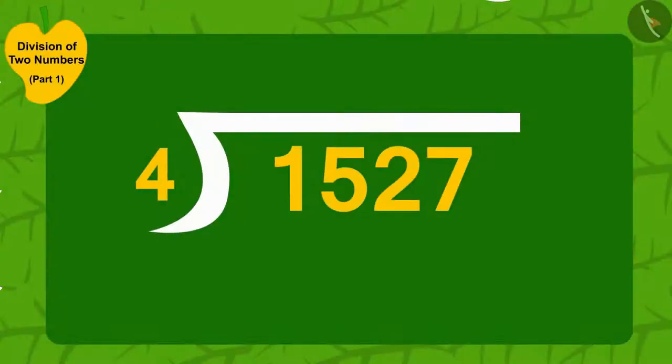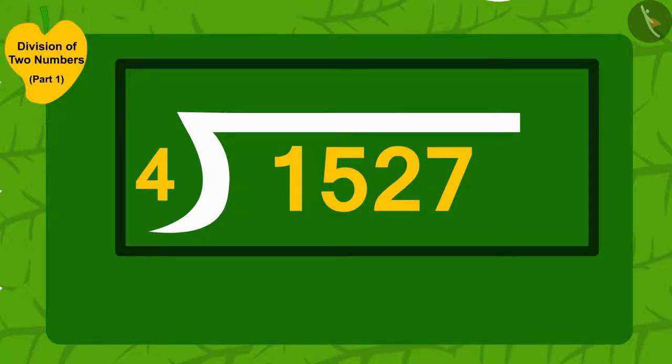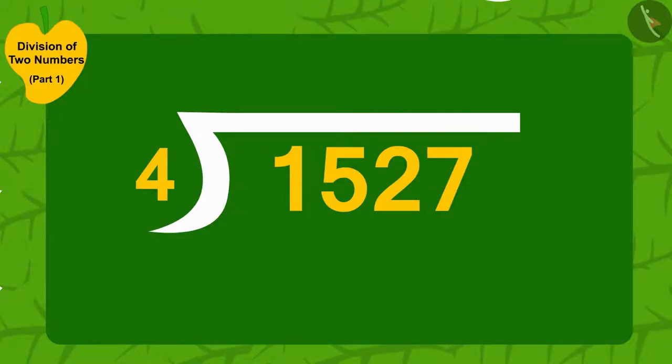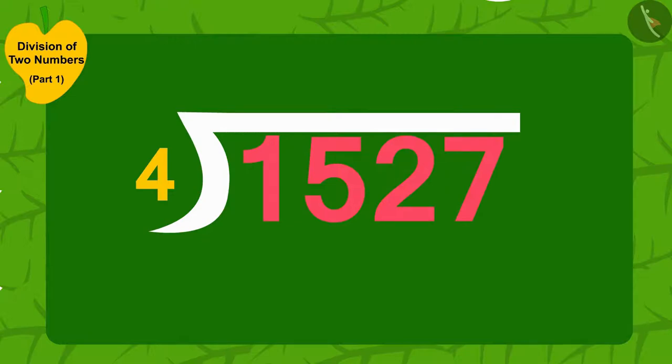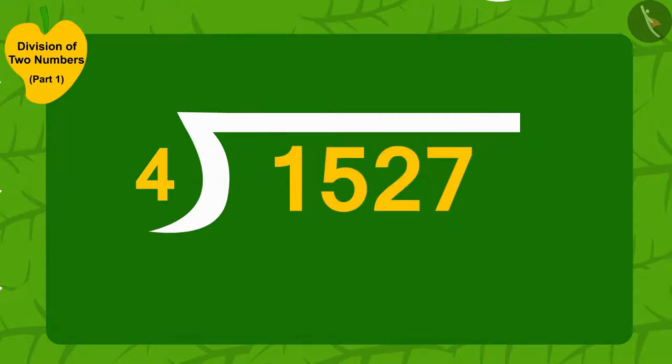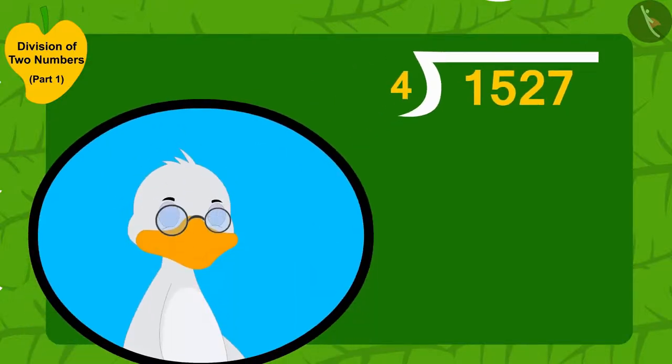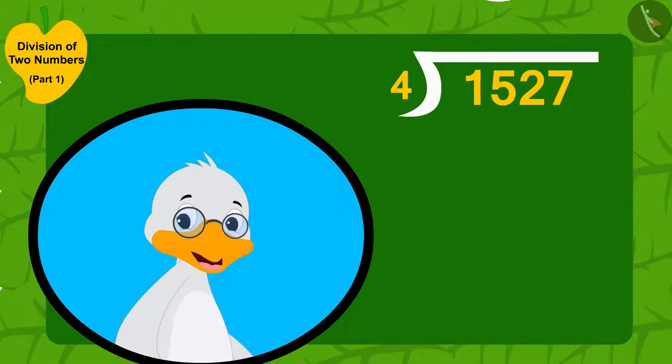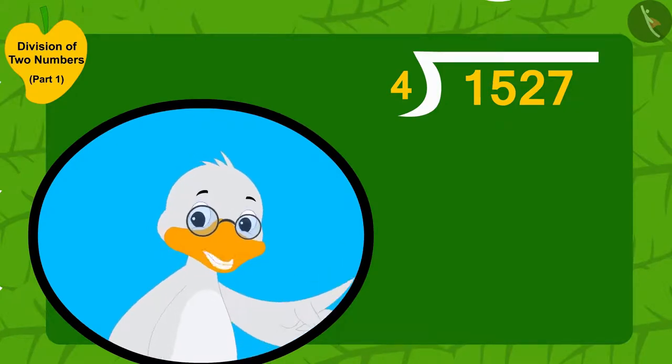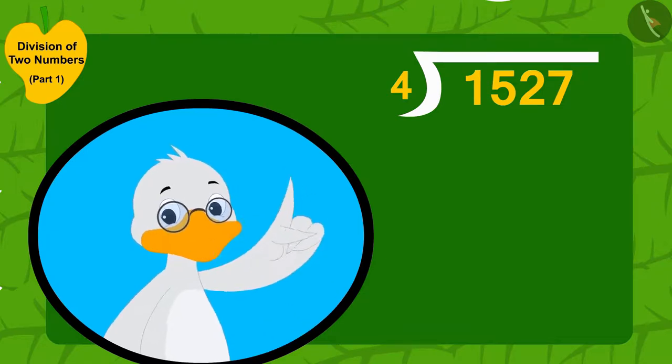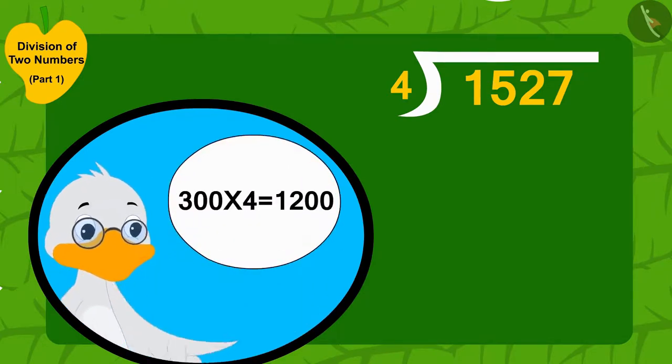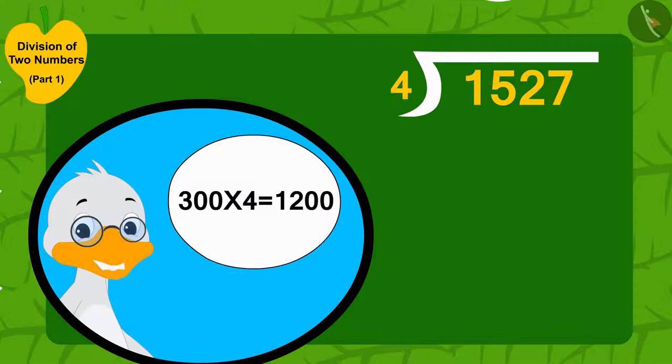Barbole Uncle immediately wrote it down on a piece of paper. 1,527 divided by 4. I distributed four mangoes to 300 villagers. That means, I distributed 300 multiplied by 4. That is 1,200 mangoes.